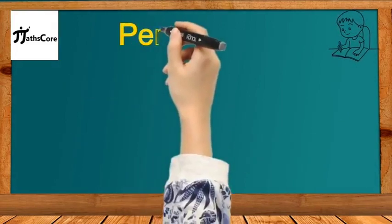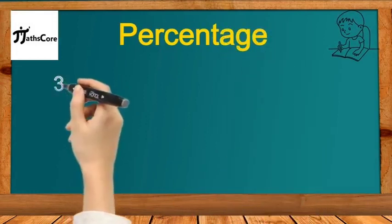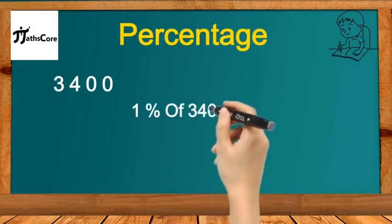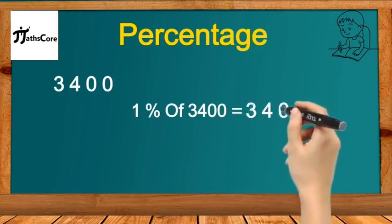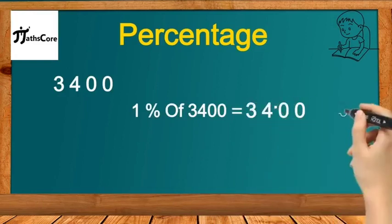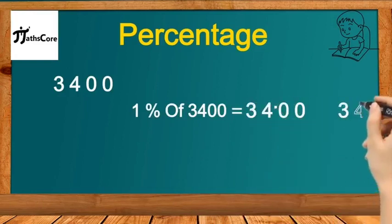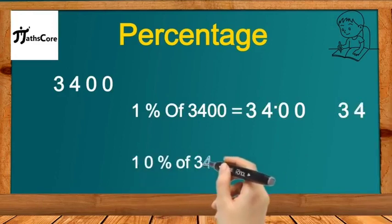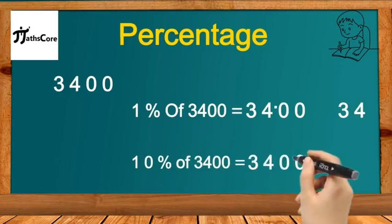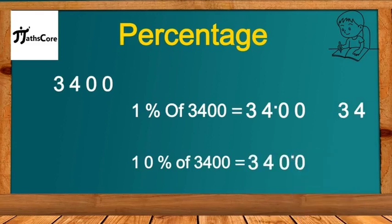Let us find 1% and 10% of 3400. To find 1% of 3400, we put the decimal point two places from the right, giving us 34. To find 10% of 3400, we put the decimal point one place from the right, giving us 340. In this way, you can calculate 1% and 10% of any number.